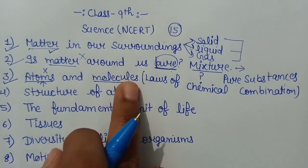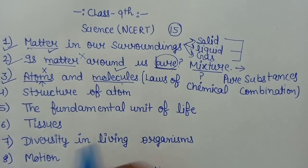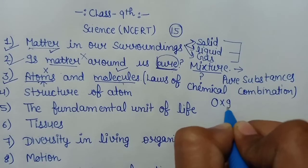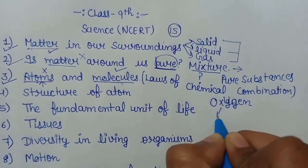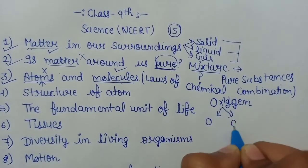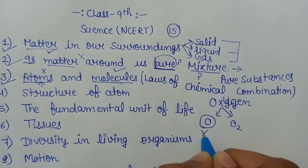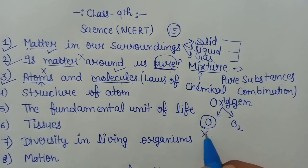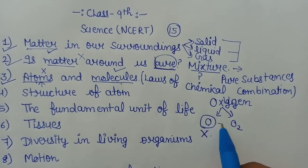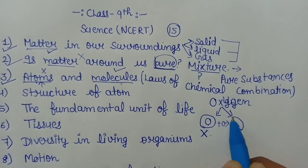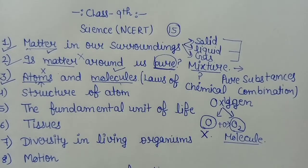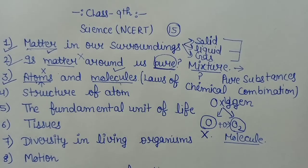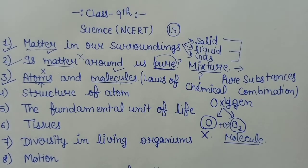And if I talk about molecule — molecule वो smallest unit है जो independently exist कर सकती है. For example, अगर हम oxygen की बात करें तो oxygen का atom है O और उसका molecule है O2. अगर मैं O की बात करूँ तो environment में कभी भी हमें O नहीं मिलेगा — O independently exist नहीं करता। लेकिन अगर एक और oxygen मिल जाए तो हमें मिलता है O2, that is a molecule — and it can exist freely. तो इन्हें chapter number 3 में discuss करेंगे।